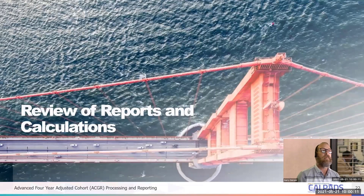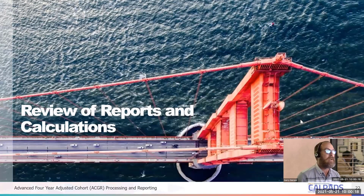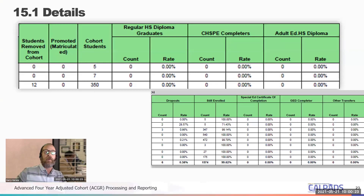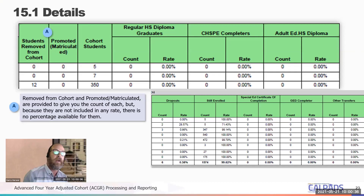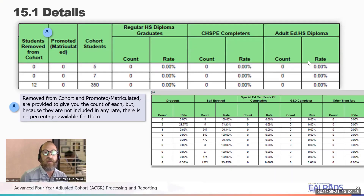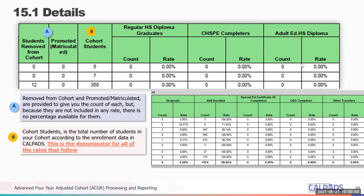Now we're going to review the reports and the calculations. The 15.1 is pretty wide so we break it into sections. The first section is column A — students removed from the cohort and your promoted matriculated, which is going to be zero for mostly all LEAs. These students are not part of the cohort student totals, which is in column B. Column B is your total cohort students — students from all your outcomes totaled up. This is the denominator for all the rates that are calculated.